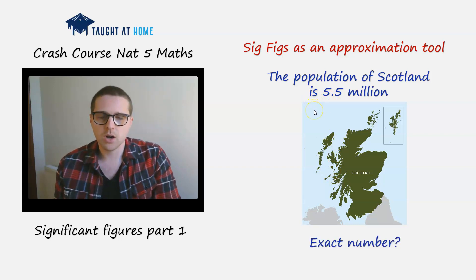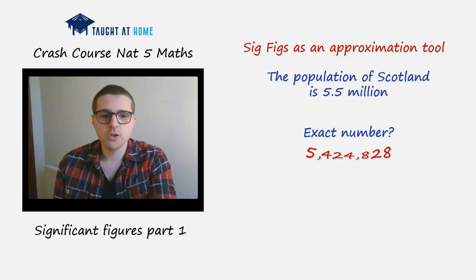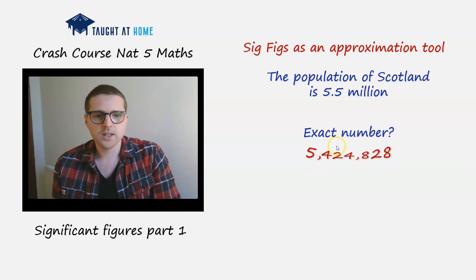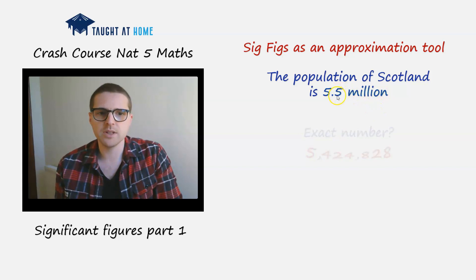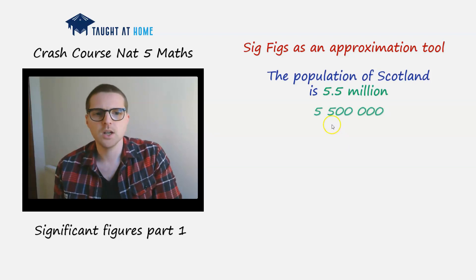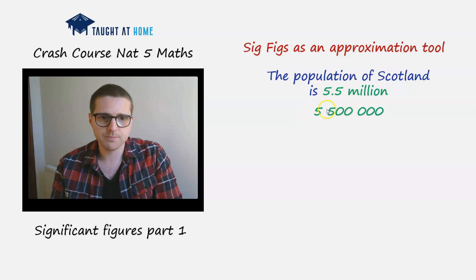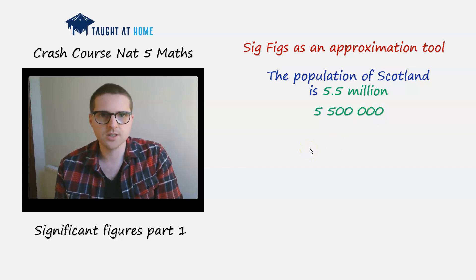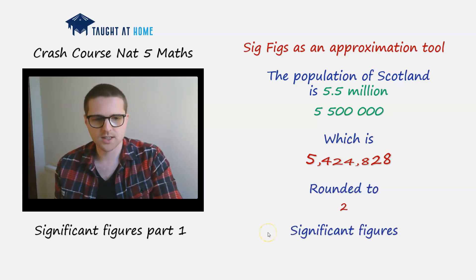What is the exact population of Scotland? A census recently said there were 5,424,828. We can see that 5.5 million has been approximated to a number with two digits — two significant figures. Written out in full, 5.5 million has two non-zero numbers (the two fives) and the rest are zeros. So 5.5 million is the exact number rounded to two significant figures.